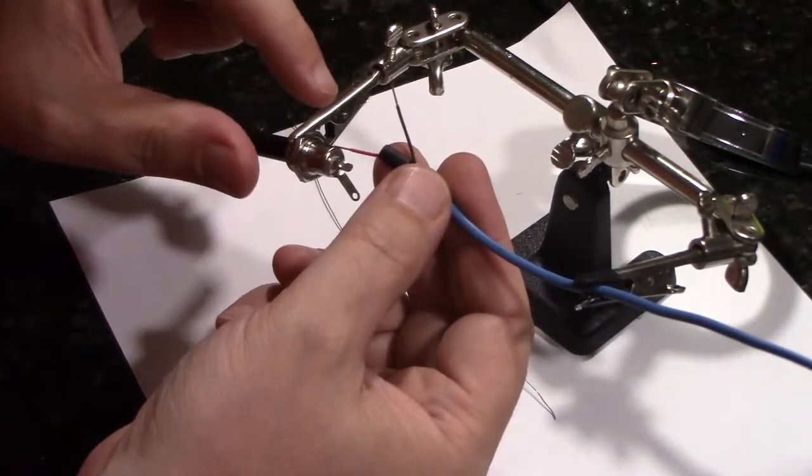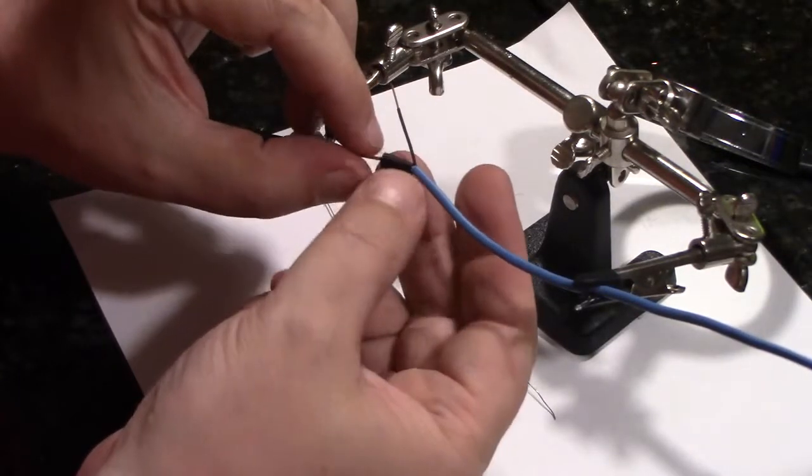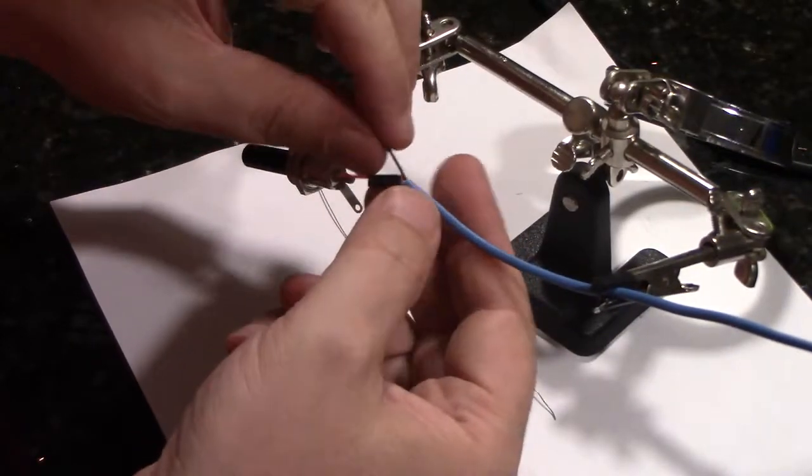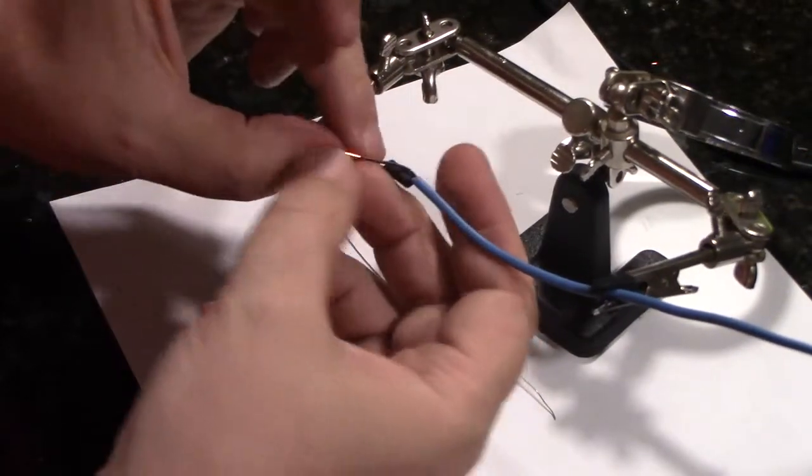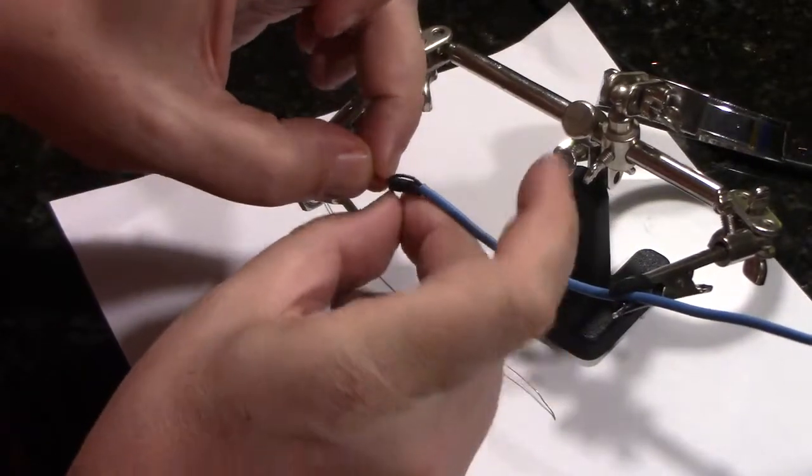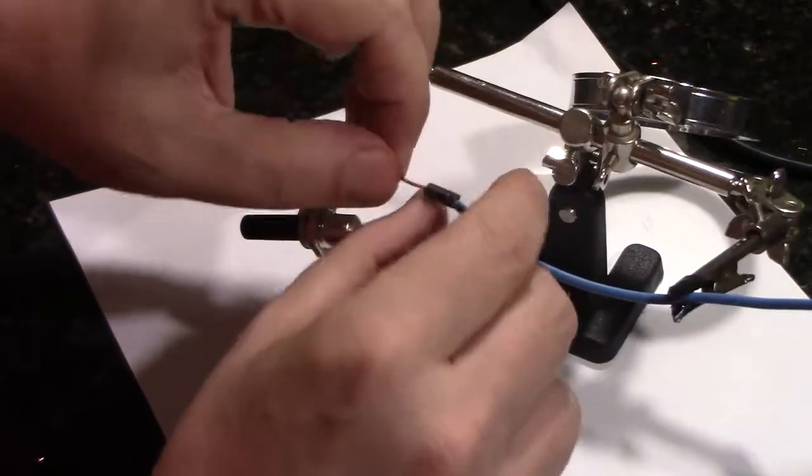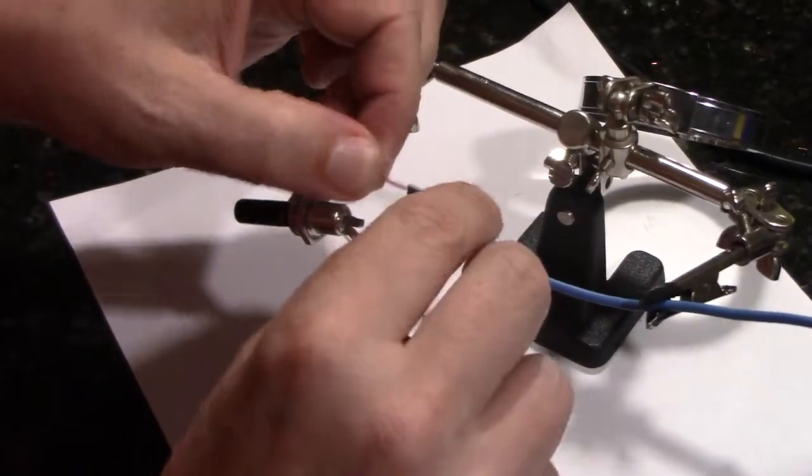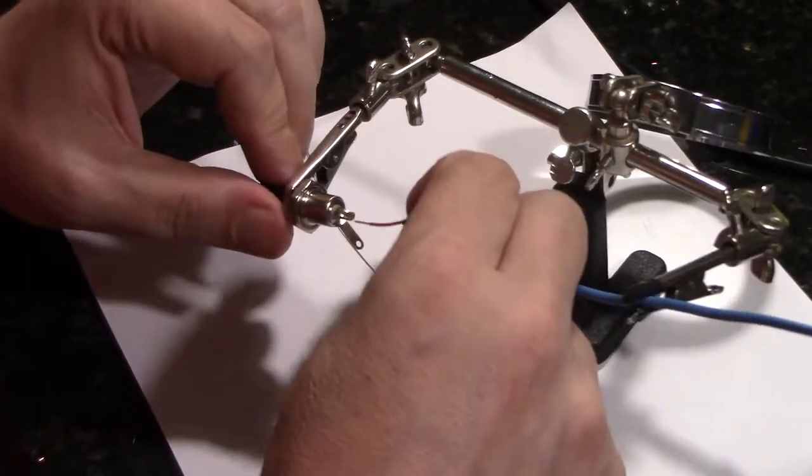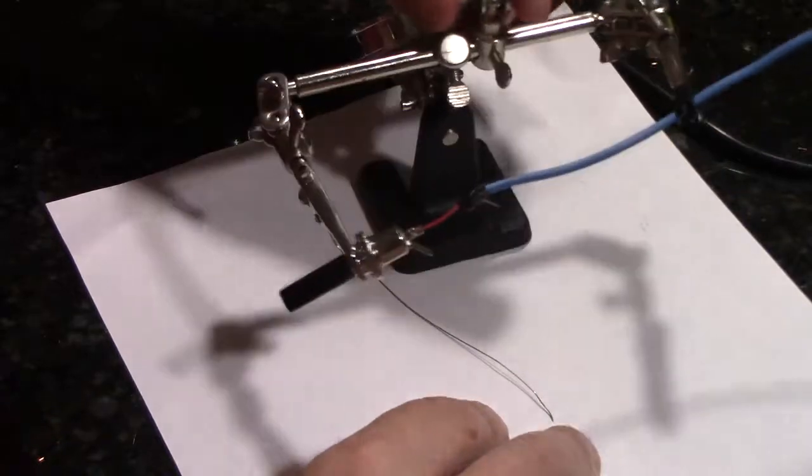One of the things that happened the first couple times I did this is that the heat from the soldering iron actually shrank the heat shrink tubing before I had a chance to put it in place, and so I had to redo it. A little trick I figured out is that I can use the wire that I'm not soldering to hold that piece of heat shrink tubing back and out of the way.